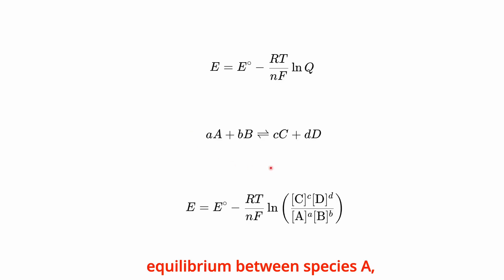Consider the general equilibrium between species A, B, C, and D, where oxidized species are written on the left and reduced species on the right. The Nernst equation in this case can be expressed as the ratio of the activities, approximated by concentrations, of the reduced species each raised to their respective stoichiometric coefficients in the numerator and those of the oxidized species in the denominator.